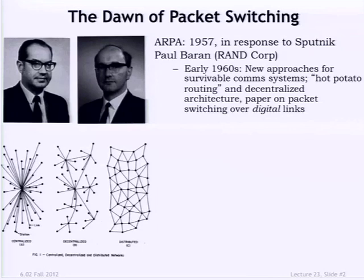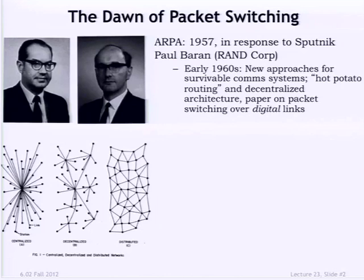Paul Baran was probably one of the first people who realized that computing and digital technologies could change how you build these systems. The digital abstraction lets you know for certain whether a component is working — if it works, it gives you a verifiable answer; if it doesn't, it just stops. An analog system, by contrast, might be partially degraded and garbled without you knowing. With a digital system, it either works or it doesn't. He noticed you could now start to build reliable systems out of lots of unreliable individual components — a guiding theme for large-scale computing from the late 1950s to today's Google, Amazon, and Facebook data centers.